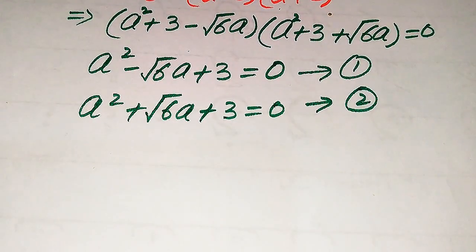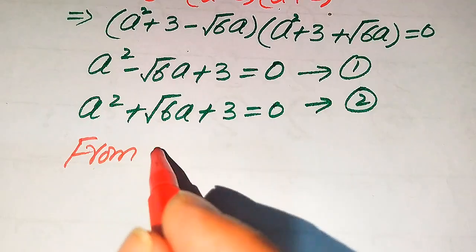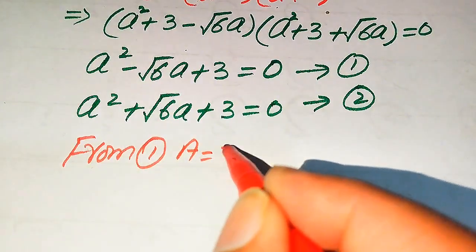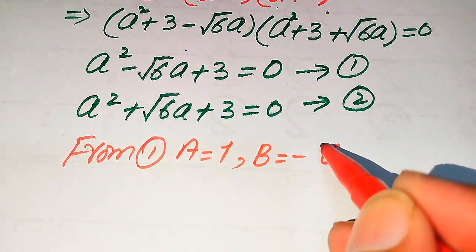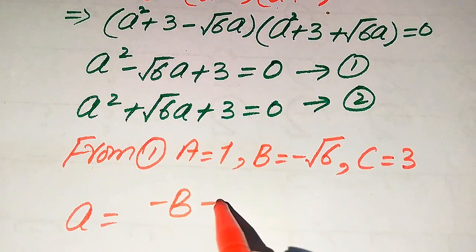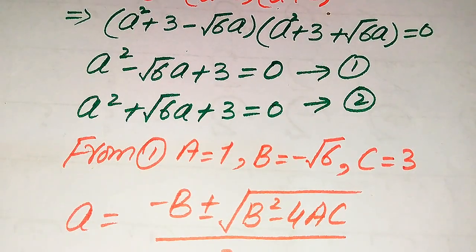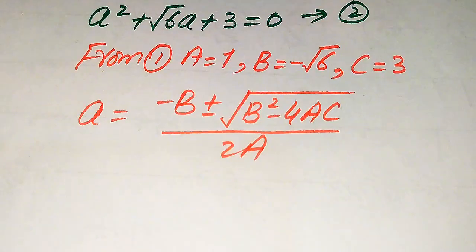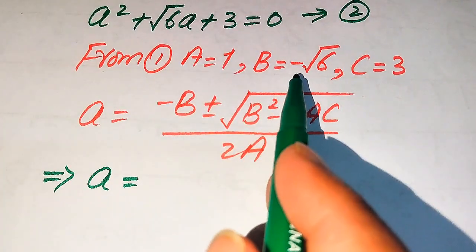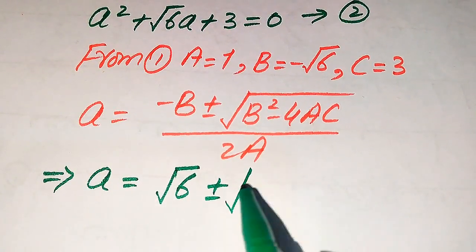We solve these two equations simultaneously using the quadratic formula. Applying it to equation 1, the coefficients are: A = 1, B = −√6, C = 3. The quadratic formula is a = [−B ± √(B²−4AC)] / (2A). Substituting, we get a = [−(−√6) ± √((−√6)²−4·1·3)] / (2·1), which becomes [√6 ± √(6−12)] / 2.